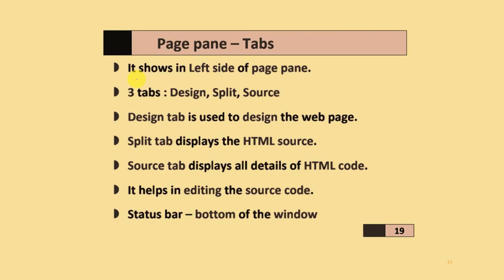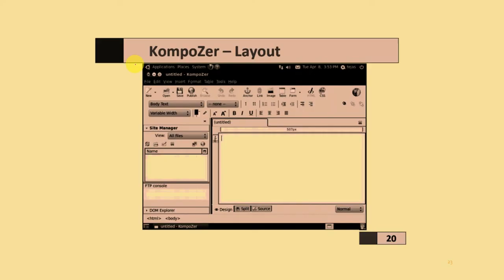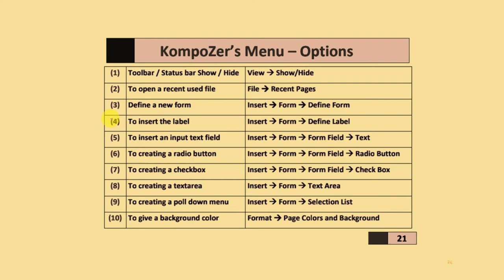Page panels are shown on the left side of the window and have three tabs: Design, Split, and Source. The Design tab is used to design a webpage. The Split tab displays the HTML source alongside the design. The Source tab displays the details of HTML code and helps in editing source code. There is also a status bar at the bottom of the window. Various menu options are available for adding toolbars, defining new forms, inserting labels, text input fields, radio buttons, checkboxes, text areas, pull-down menus, and setting backgrounds. This concludes the summary of chapter one.